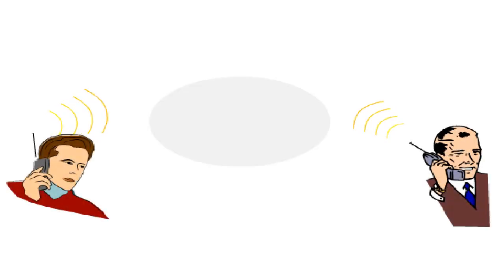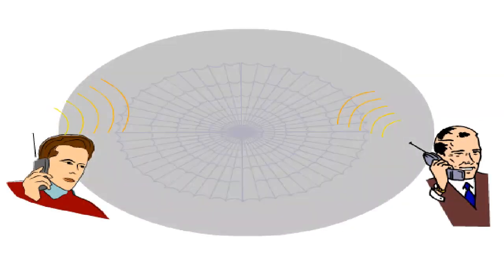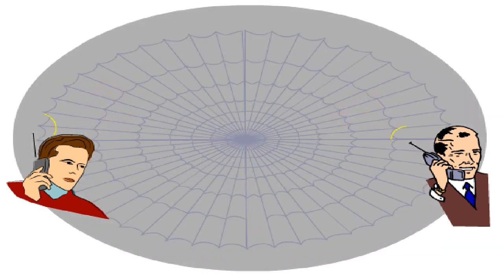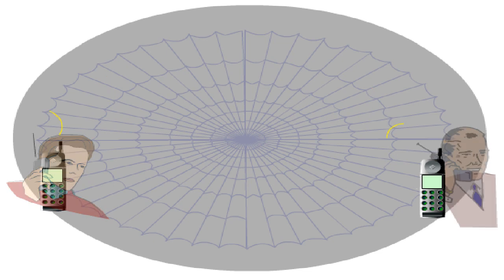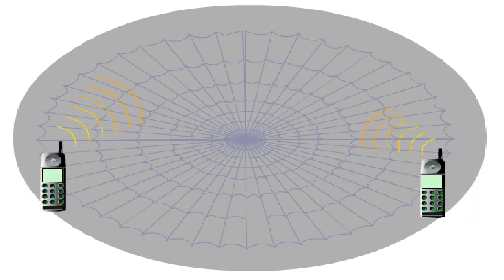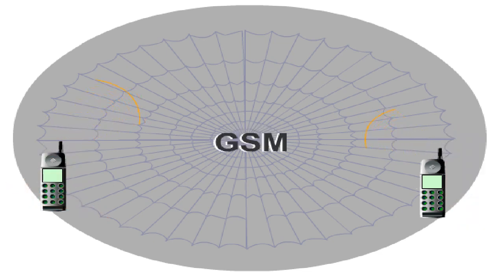For the subscriber, a mobile telephone call is a simple process. In reality though, this call is only possible thanks to a complex network architecture consisting of various different network elements. In this lesson, you'll get to know the individual elements of the GSM network and their basic functions.